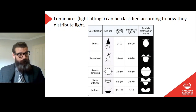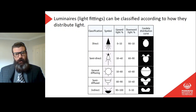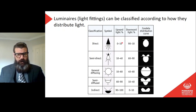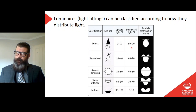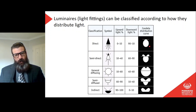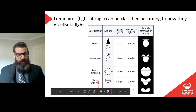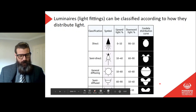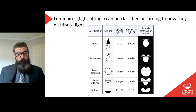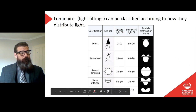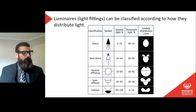As we can see on the slide, we have direct, semi-direct, general diffusing, semi-diffused, and indirect. Those are based on the percentage of upward versus downward light. If we look at the direct one, it's zero to ten percent upward and 90 to 100 percent downward light — that would be our distribution curve. Indirect lighting is going to be about 90 to 100 percent upward and only maybe ten percent downward.